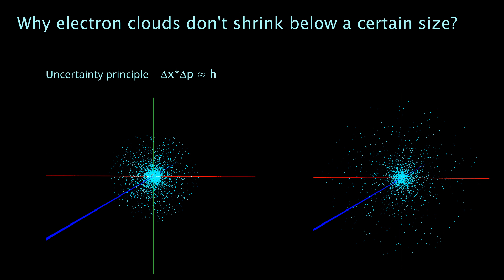Wave-particle duality has an interesting consequence for the energy of electrons, and this means for the energy of the whole system. If you look at this picture, you see two hypothetical s-orbitals of different size.